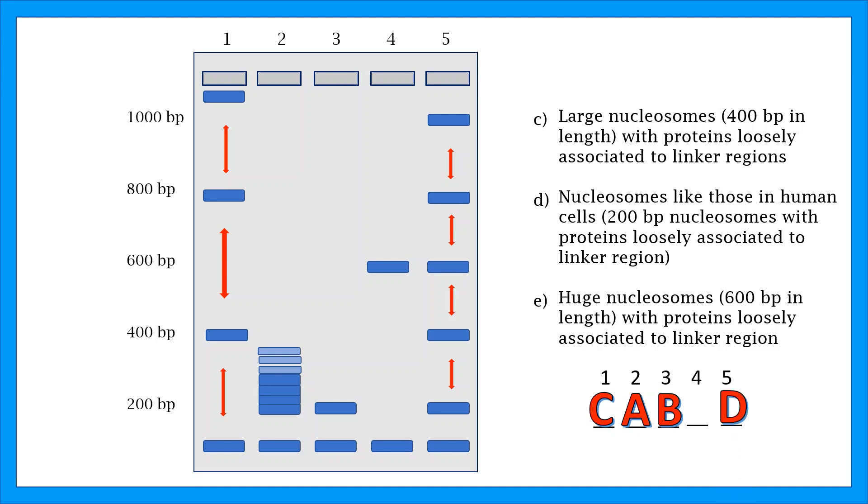And E. Huge nucleosomes, 600 base pairs in length, with proteins loosely associated to linker region. For this last option, we know that it has to be row 4, and this can be further confirmed by the nucleosome at 600 base pairs. With each of the alphabetized options organized by the correct row number, we can get our answer of C, A, B, E, D.